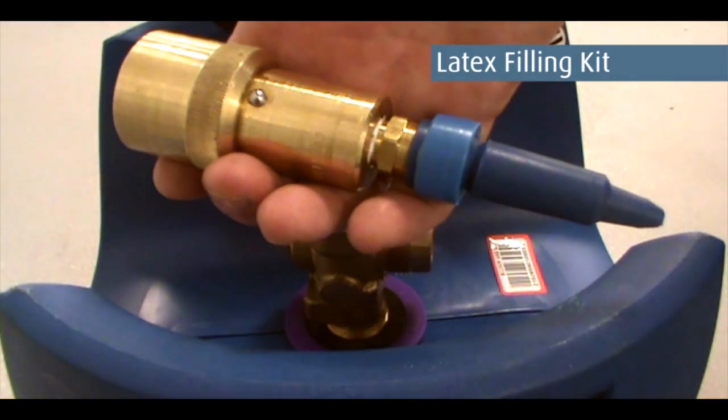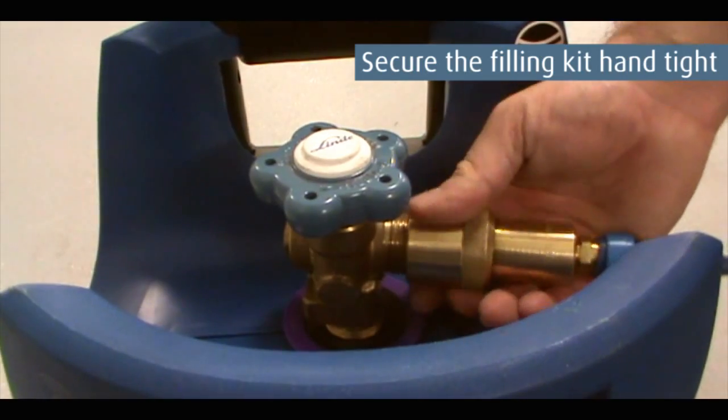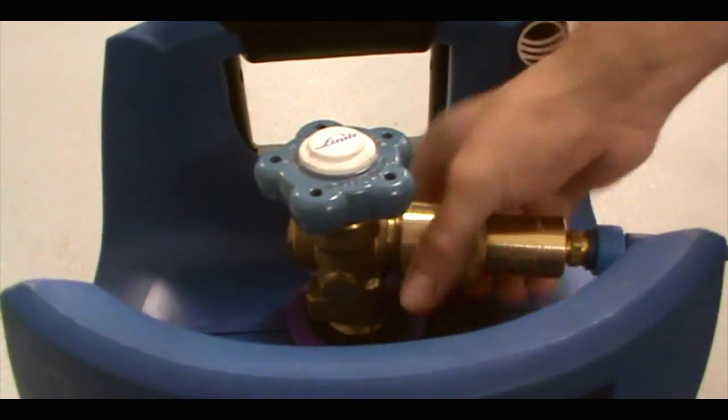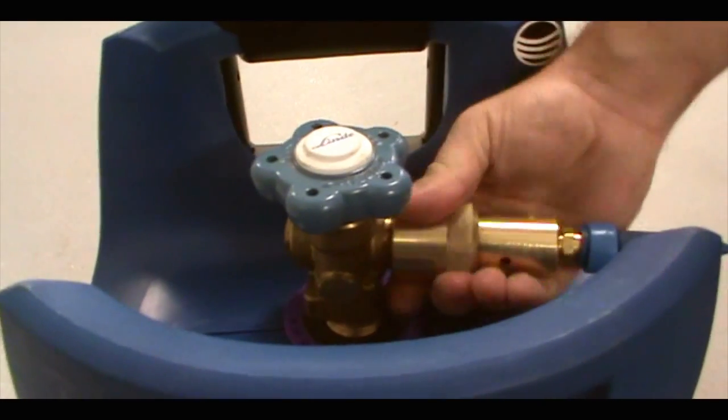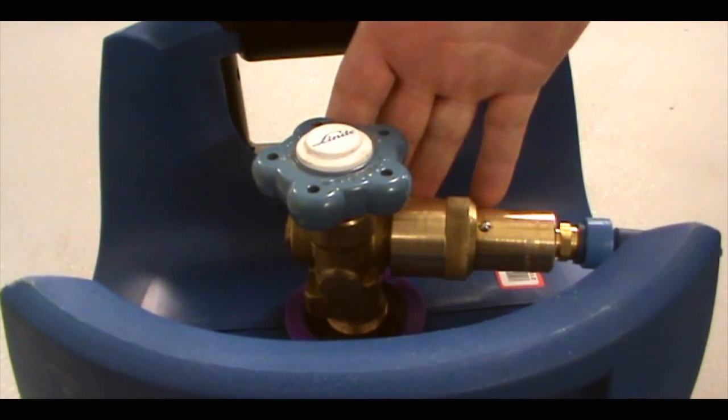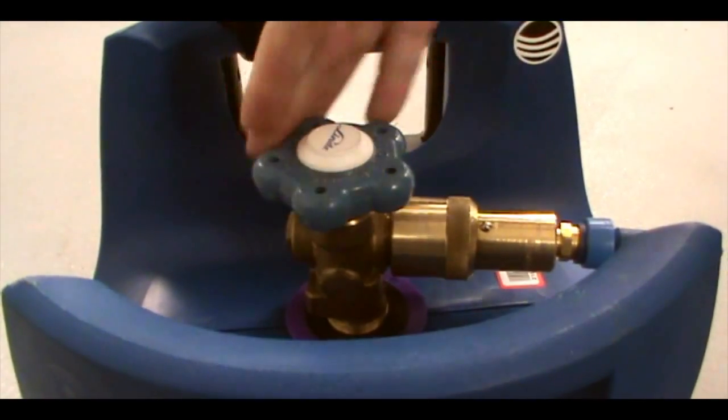This is the Genie Latex Balloon Filling Kit. To attach the kit, place the end over the Genie outlet and screw the kit on hand tight. Open the hand wheel valve anti-clockwise to allow gas into the kit.